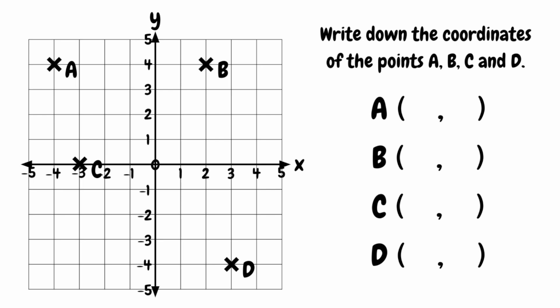For point A, starting with its x-coordinate, point A lines up with negative 4 on the x-axis, so that would be our x-coordinate for A. And then for our y-coordinate, this lines up with positive 4 on the y-axis, so our y-coordinate would be positive 4. So for A, we'd have the coordinates negative 4, 4. Then for point B, starting with the x-coordinate, B lines up with positive 2 on the x-axis, so our x-coordinate would be 2. And for the y-coordinate, point B lines up with 4 on the y-axis, so our y-coordinate would be 4. So our coordinates for B would be 2, 4.